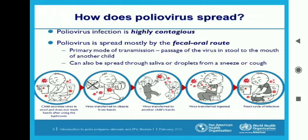It can also be spread via saliva or droplets from a sneeze or cough. A child excreting virus in the stool and not washing hands after using the bathroom will transfer the virus to the bathroom area and to objects. The virus can be transferred to another child through the hands of the infected person or by contact with contaminated objects, and through ingestion of contaminated food, beginning the next cycle of infection.